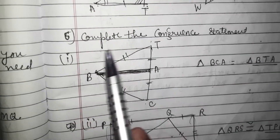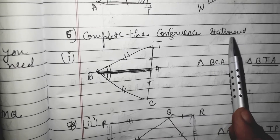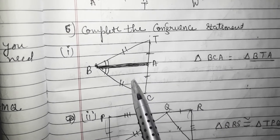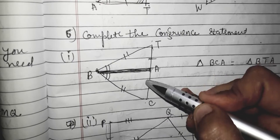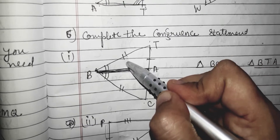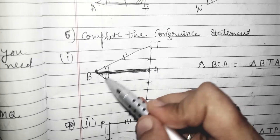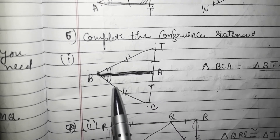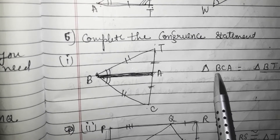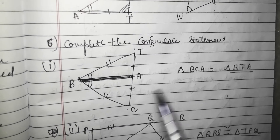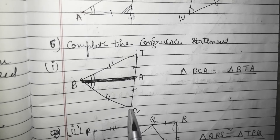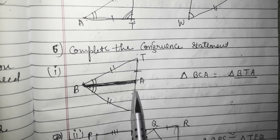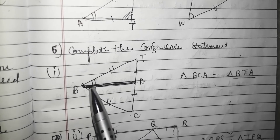Next, question 6: complete the congruence statement. There are two triangles given with congruent parts marked as equal. This side is equal to this side, the second side is equal to this side, and this angle is equal to this angle. Triangle BCA is written — I am starting from B, going to C, then to A.